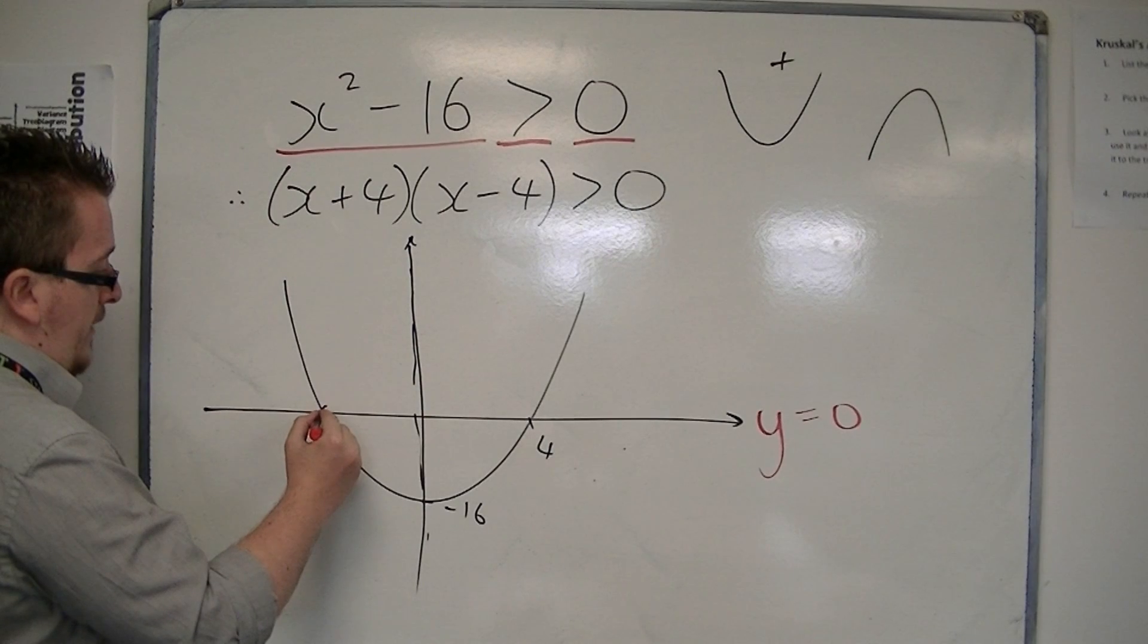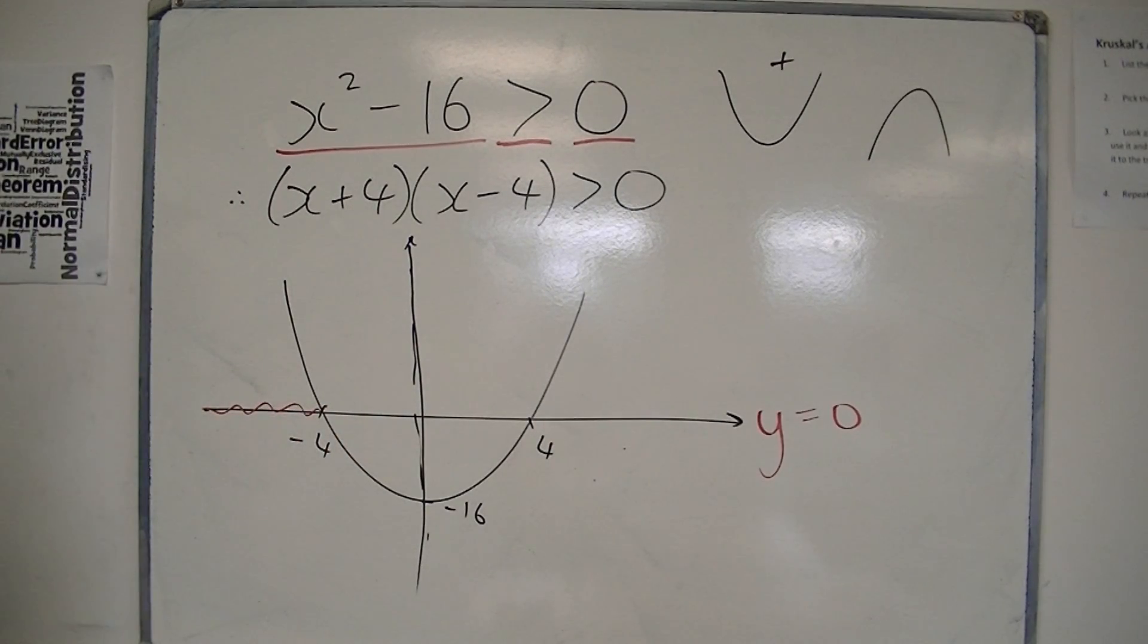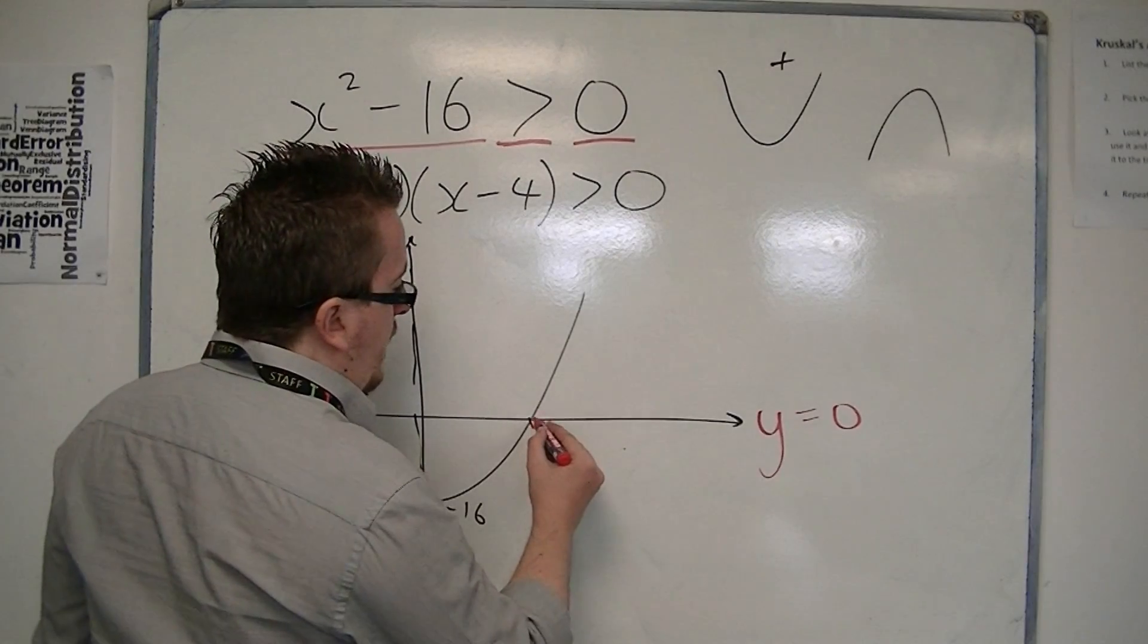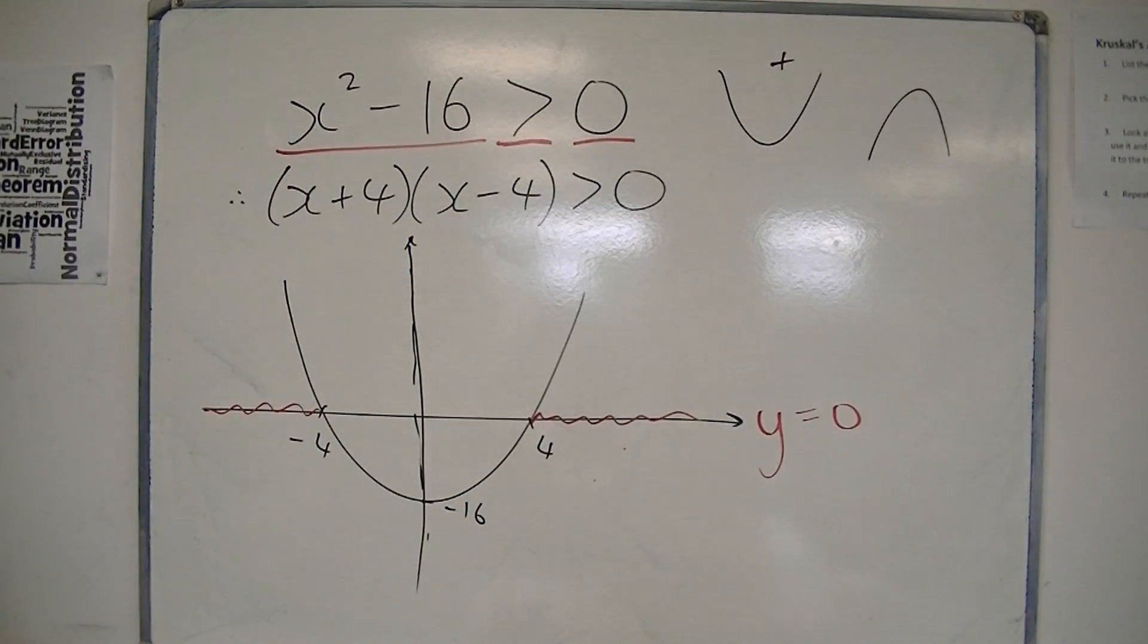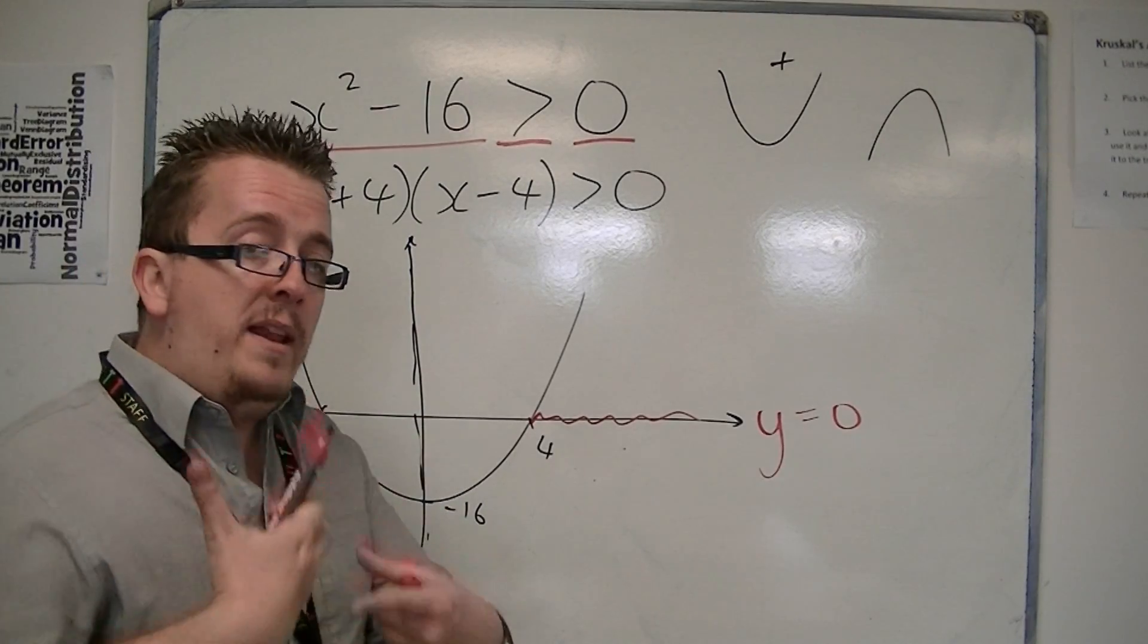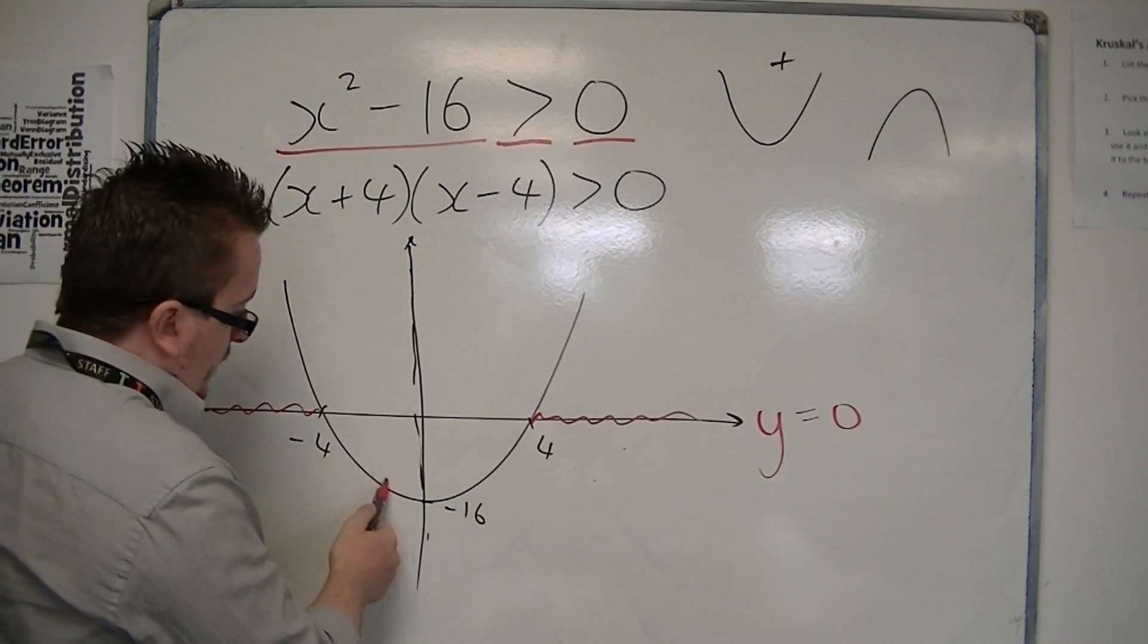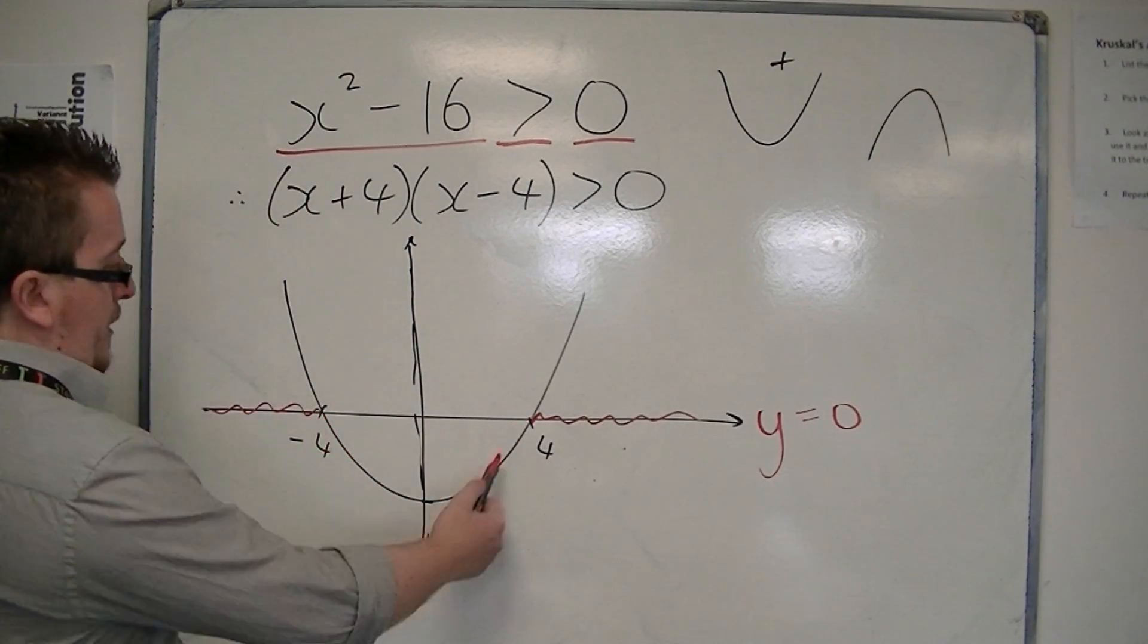So, it's above it at any of those points. And it's also above it here, any of those points. The parabola is below the x-axis between minus 4 and 4.